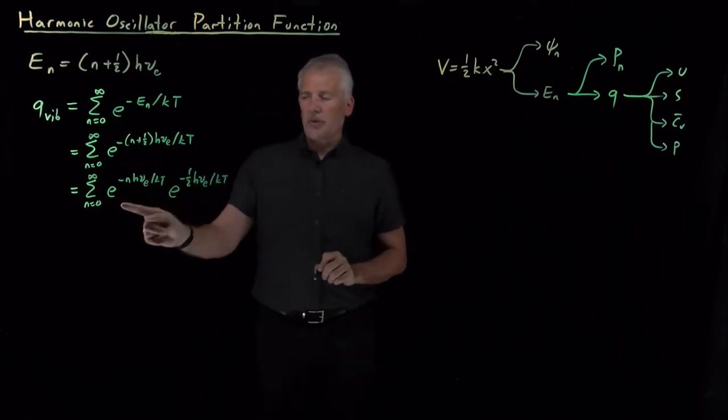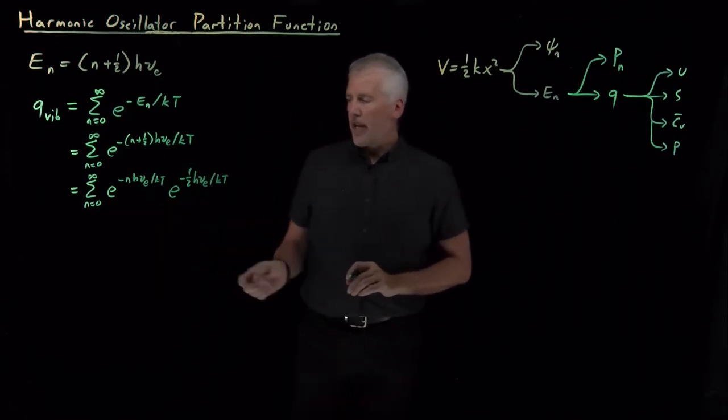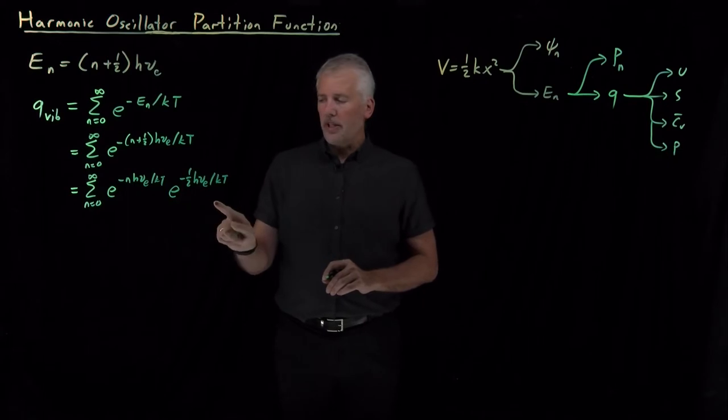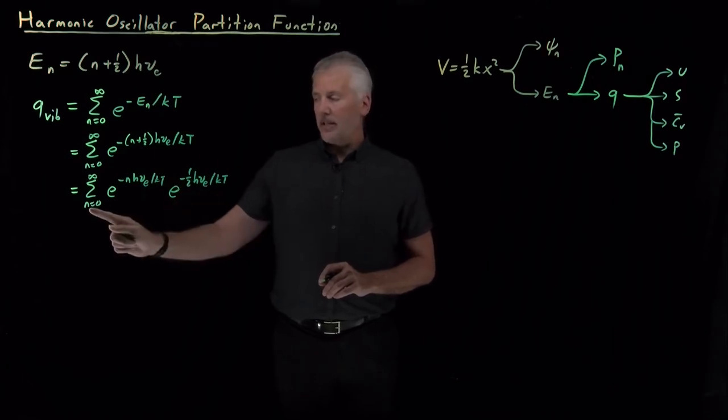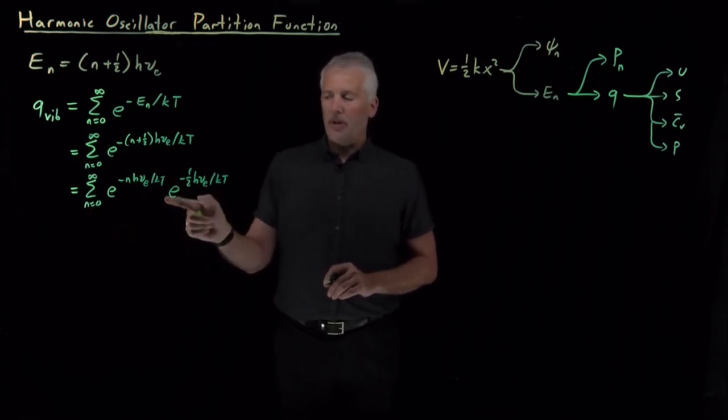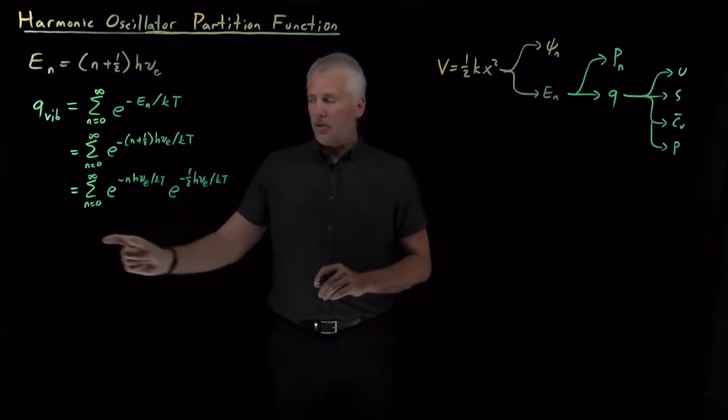I've just broken up this exponential into the product of two different exponentials. And the reason I've done that is because one of these two, the second one that I've written down, e to the minus (1/2)hν/kT, that doesn't have any n's in it. The summation variable n doesn't appear anywhere in this term. So this term doesn't depend on the value of n, and I can pull it outside of the sum.